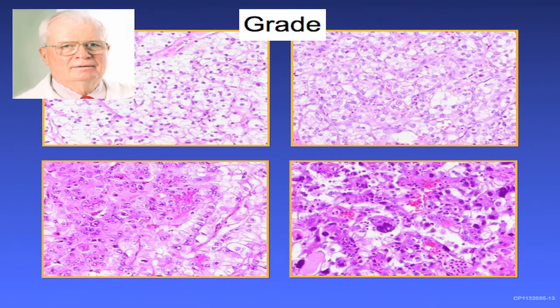Moving on to grade: some major changes were made at the consensus conference. The number one change was to drop the term Furman, since it is really a nuclear grade based on nuclear size and thus should be designated as the ISUP grade. Dr. Skinner deserves credit for developing the first and most comprehensive grading system. As a resident at Mass General, he wrote a very good paper on grading in renal cell carcinoma that was kind of lost in the literature and not even cited by Furman. He made a point to mention Dr. Compton, who was the pathologist on that study.